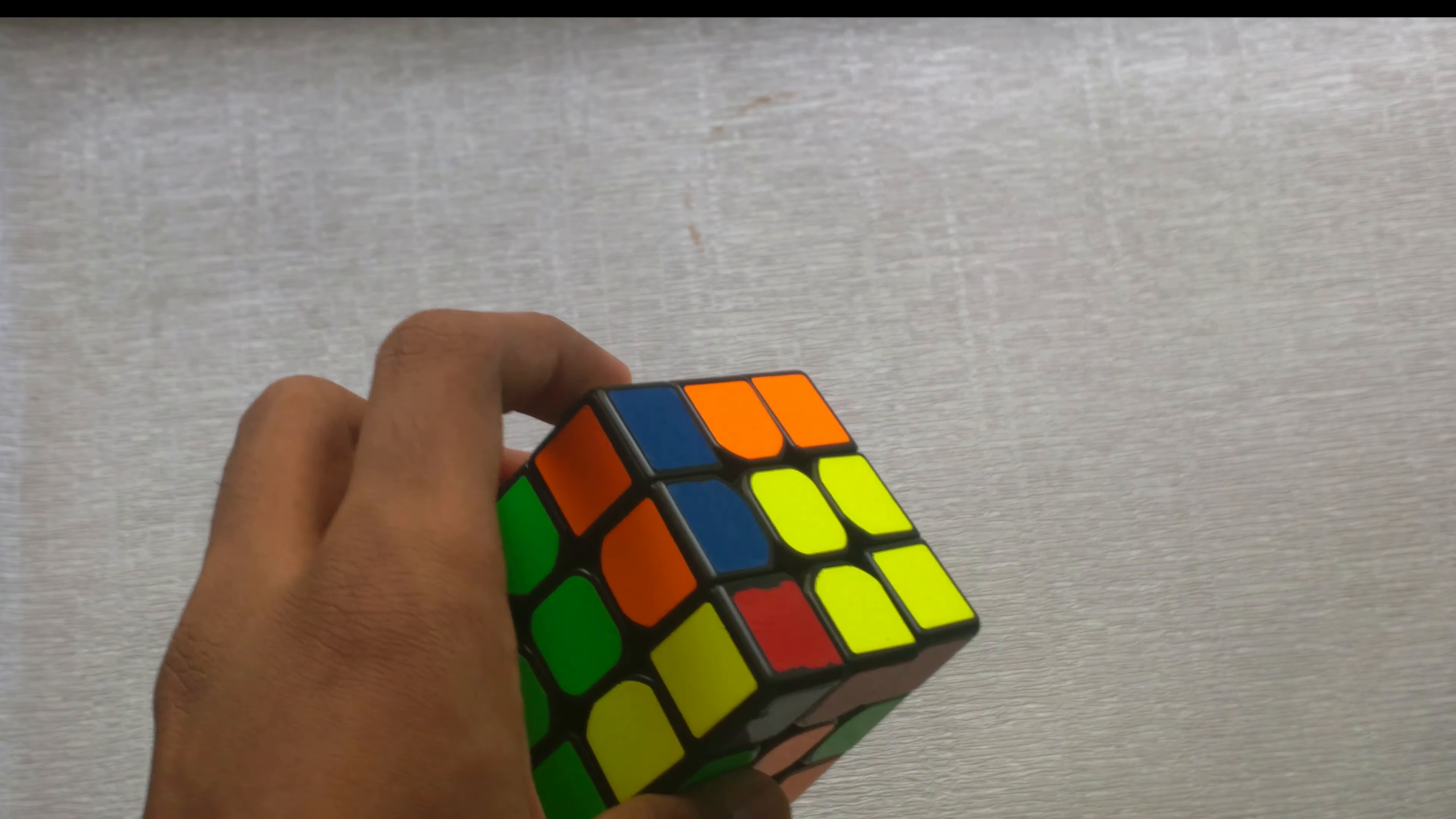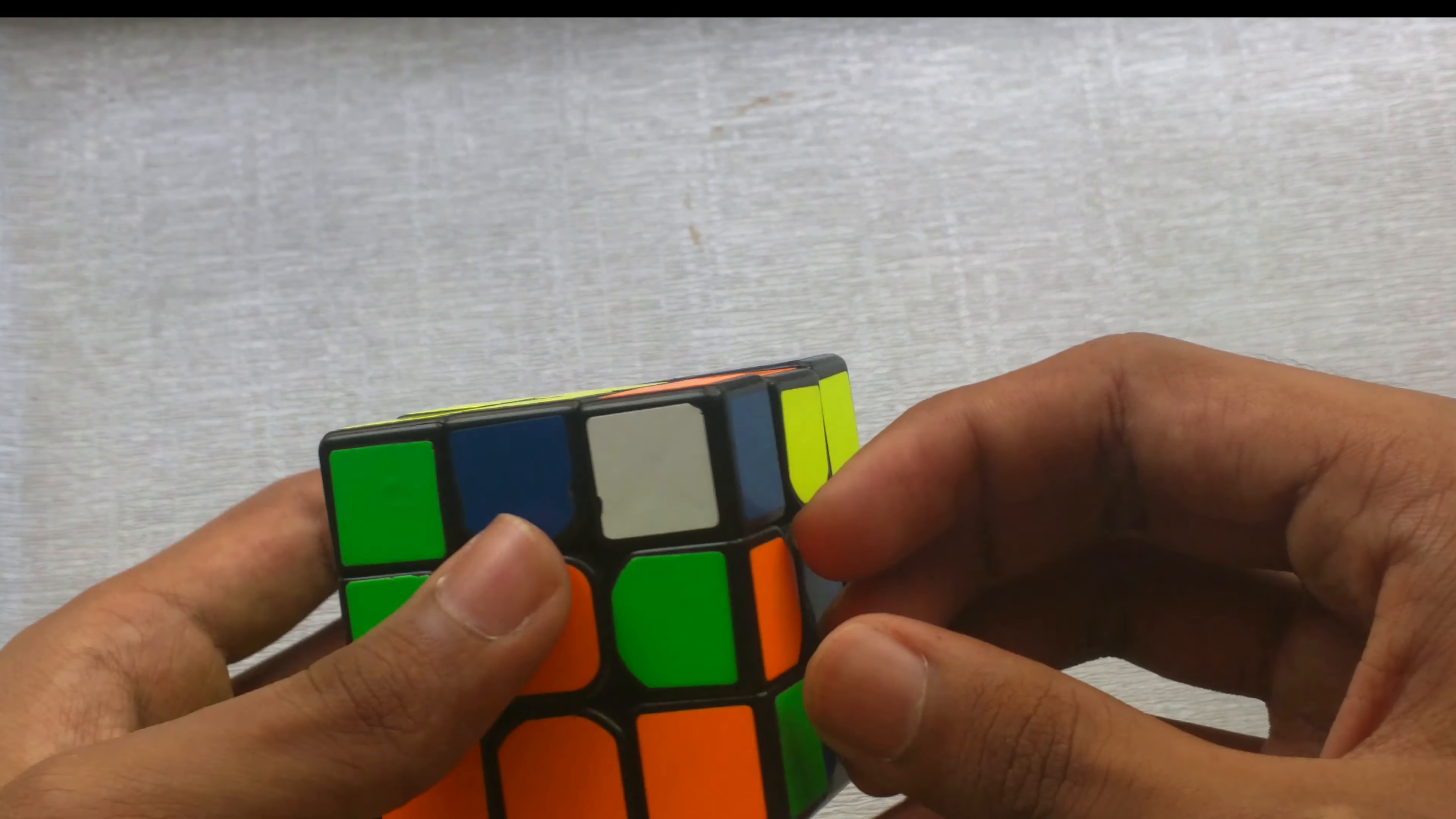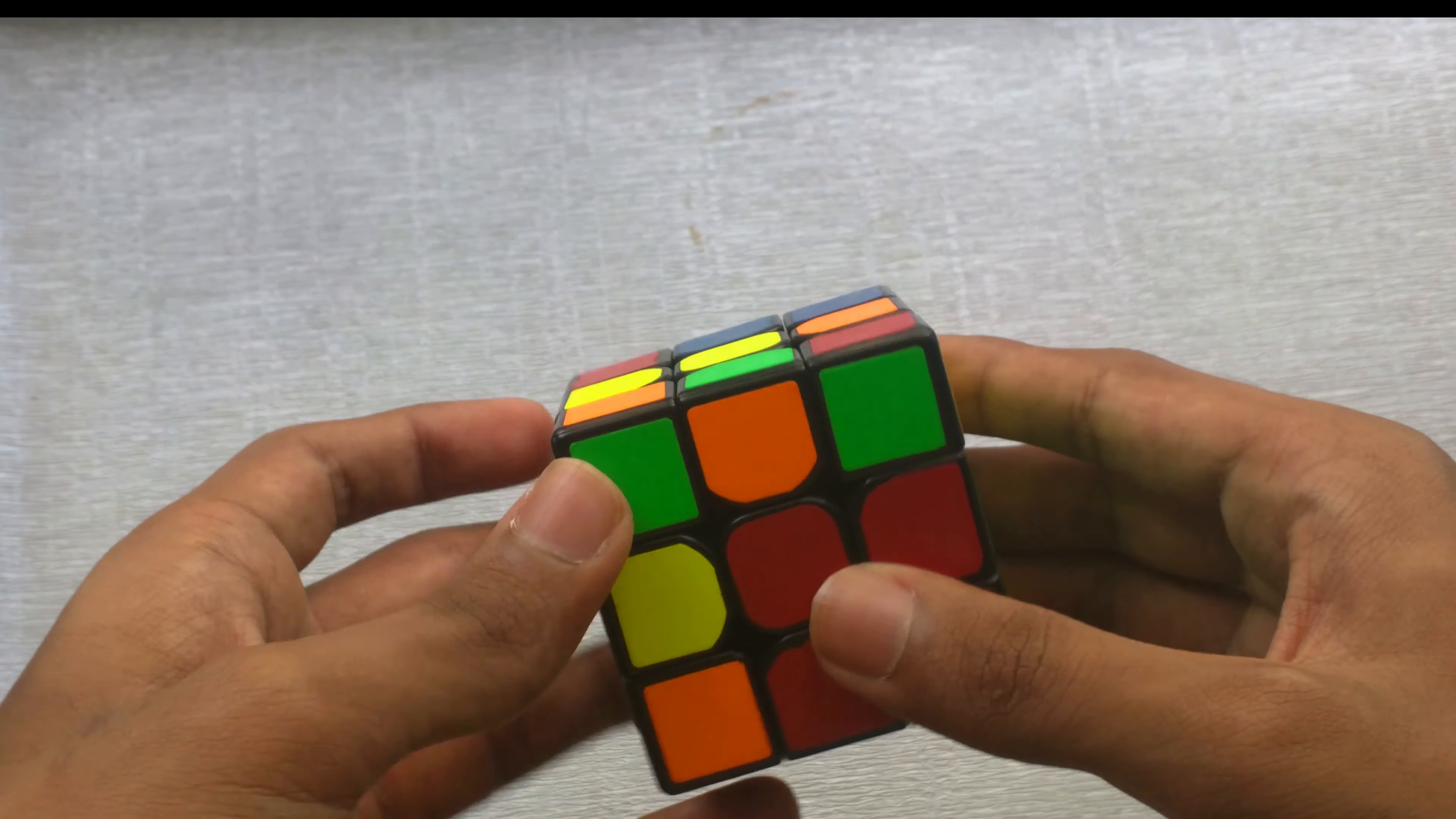But what if it's not like that? What if it's like this, where the pieces are different colors on the top? In that case, you want to move this over here. So again, just find an empty slot in the back, put this down, push it to the side, push it back up.